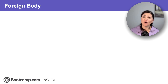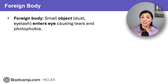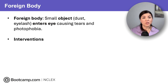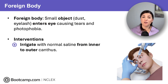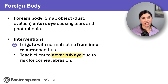So now let's move on to types of eye trauma you will most likely see on NCLEX. The most common is foreign body — this occurs when a small object like dust or an eyelash enters the eye, causing photophobia and tearing. We should irrigate with saline from the inner to the outer canthus, and remind clients to never rub the eye or the object can scratch the cornea, causing a corneal abrasion.